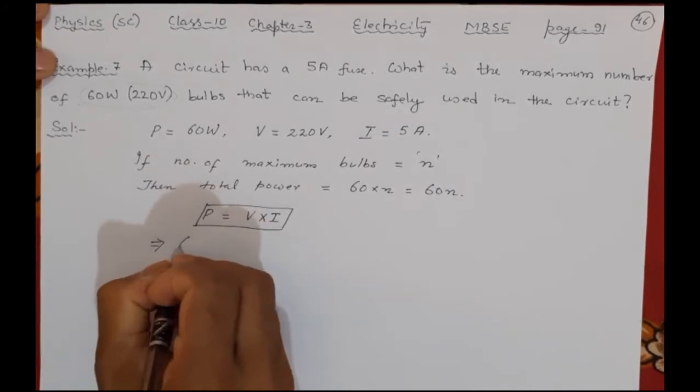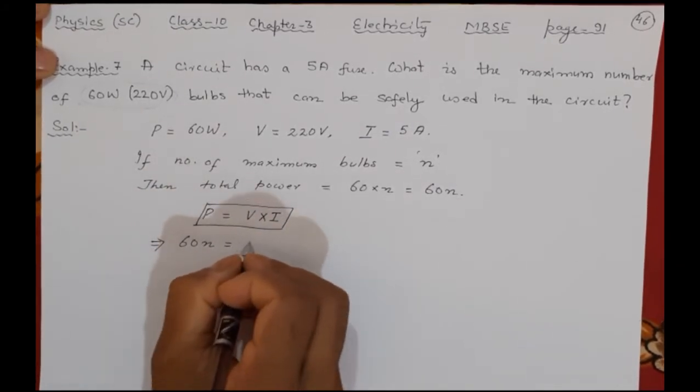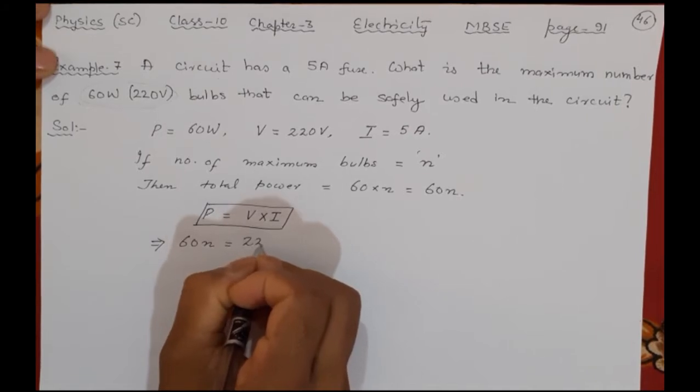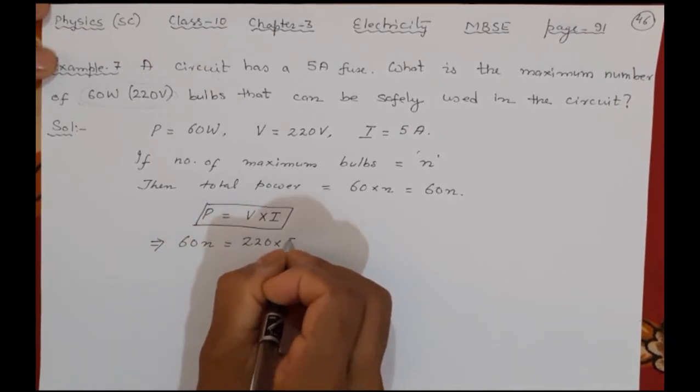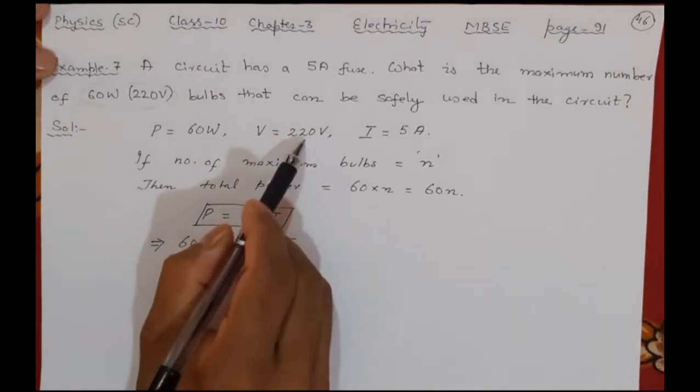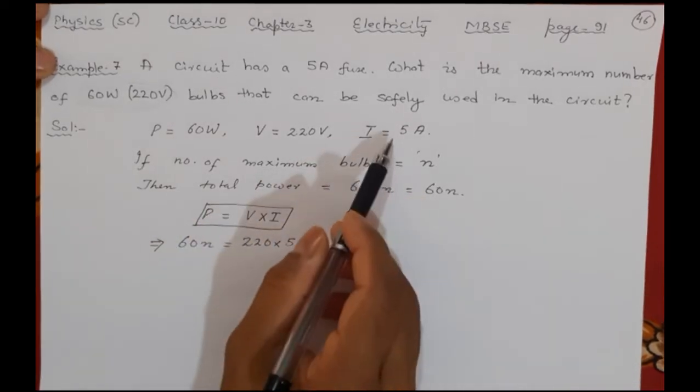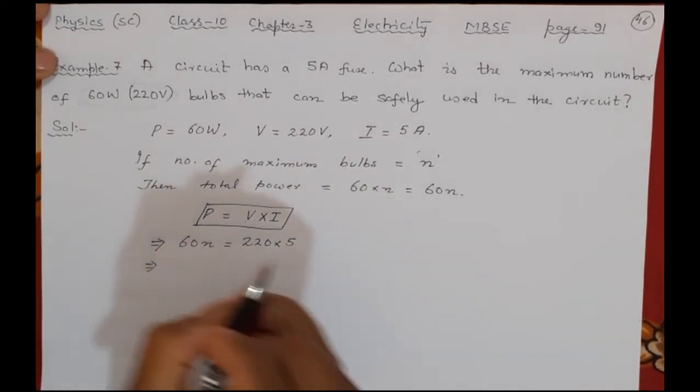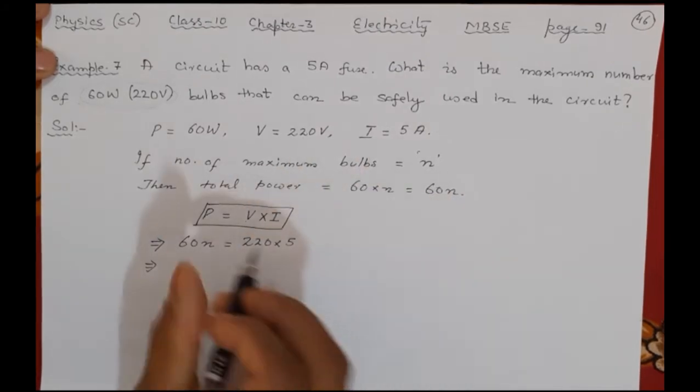So I have to find what is the n here? P is 60n, V is 220, I is 5. I have replaced all this: V from here, P from here, I from here. So here inside that P you have that unknown n that you have to find.